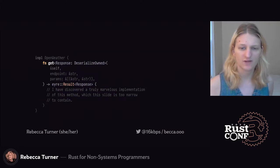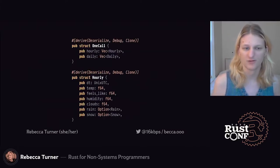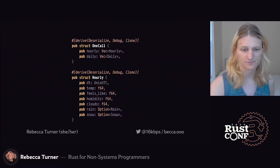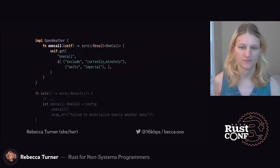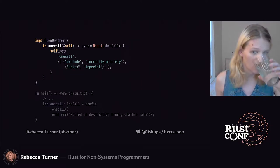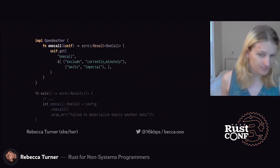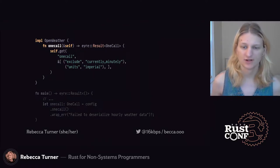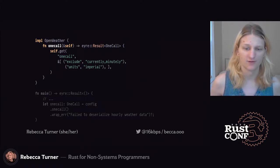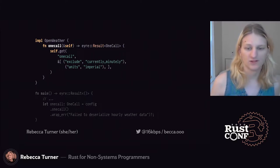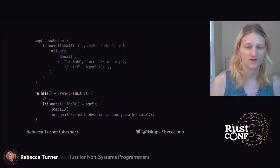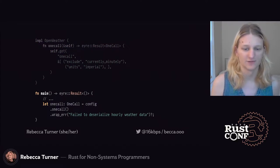We can define structs for the API responses — these are pretty much copied from the OpenWeather API docs. Then we can define a helper method to make that request directly. Note that we don't need to annotate the generic types for the `self.get` call, although we can if we want. The compiler is smart enough to figure out what the type parameter needs to be from the return type on its own. And then we can use the new method in our `main` function to get the forecast data as a richly typed struct.